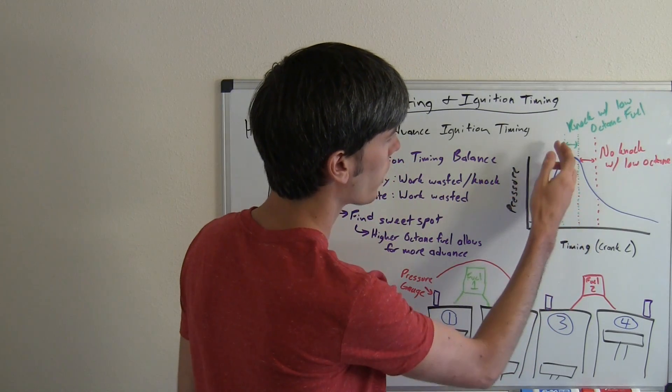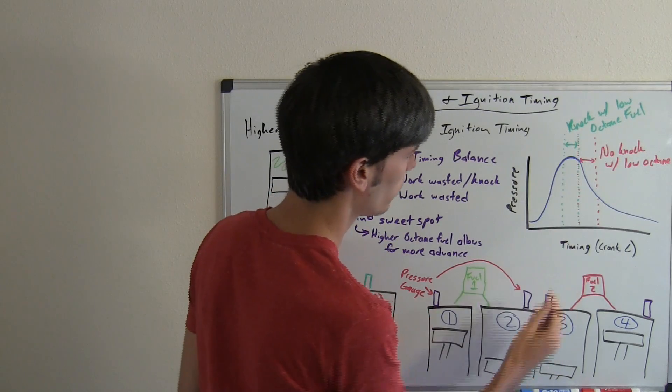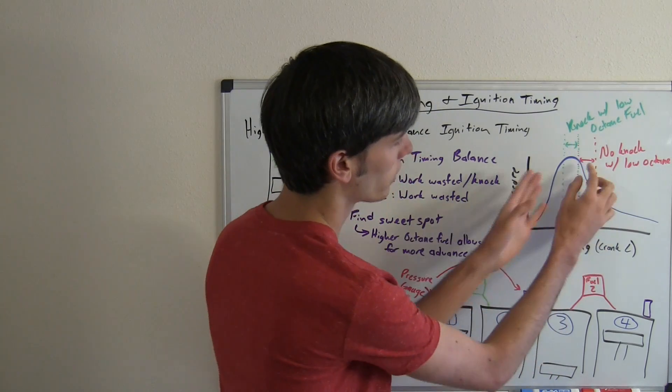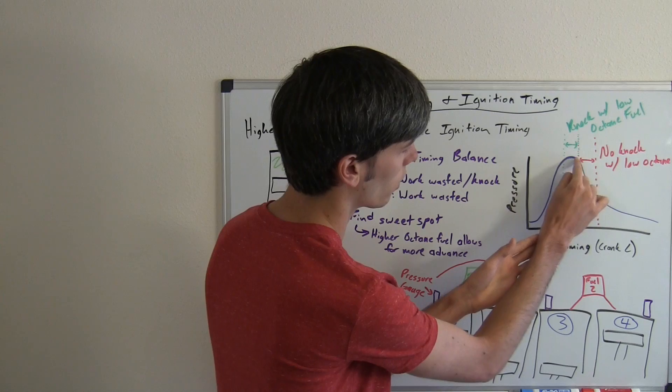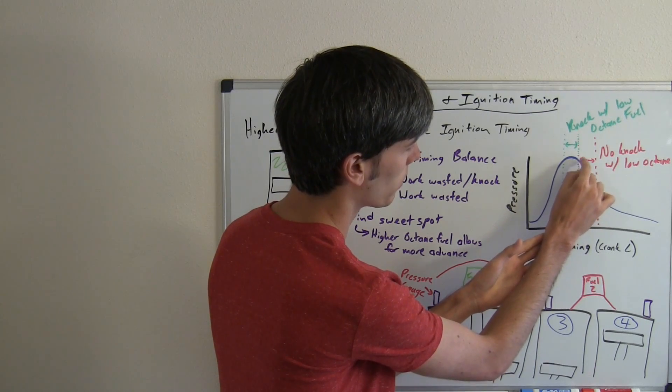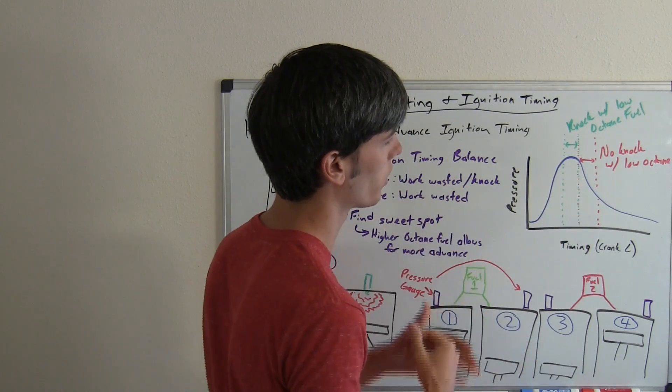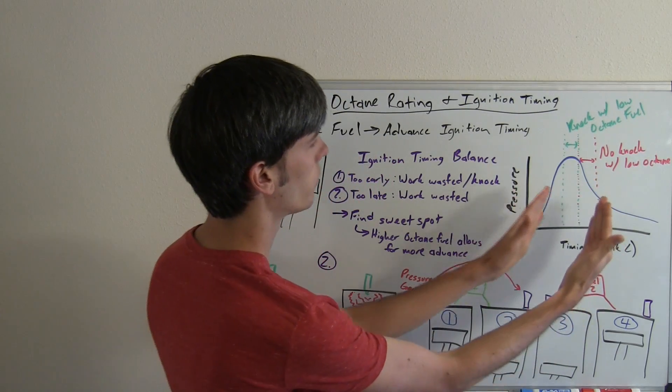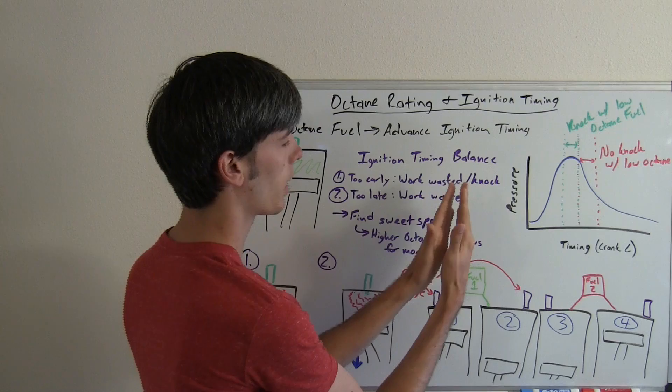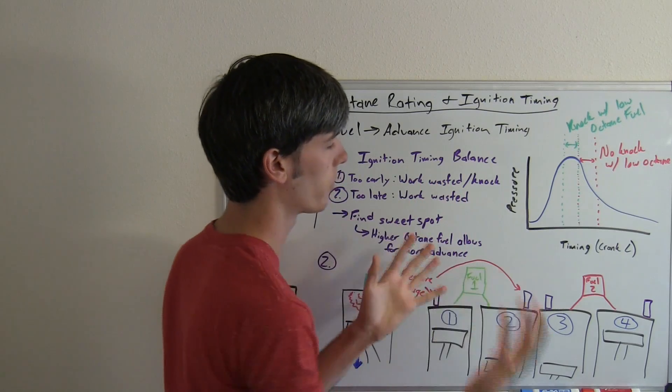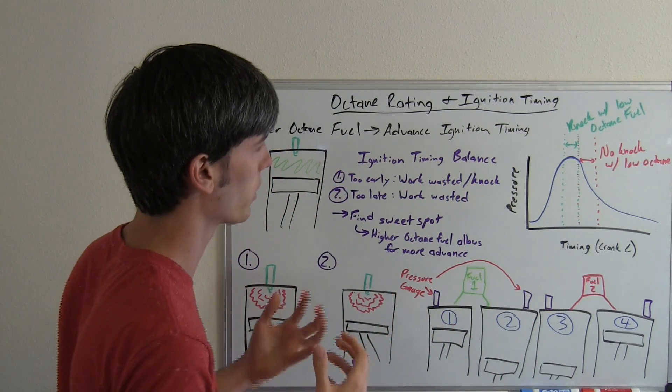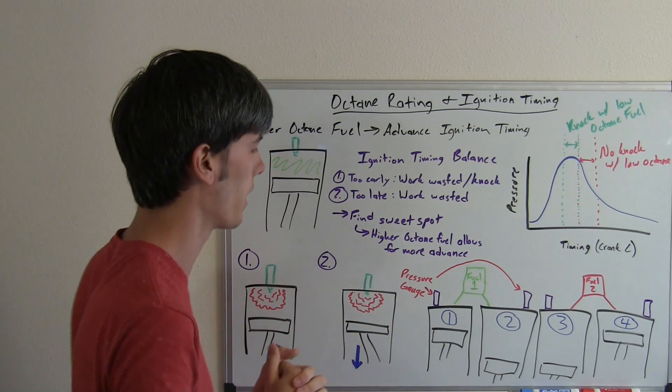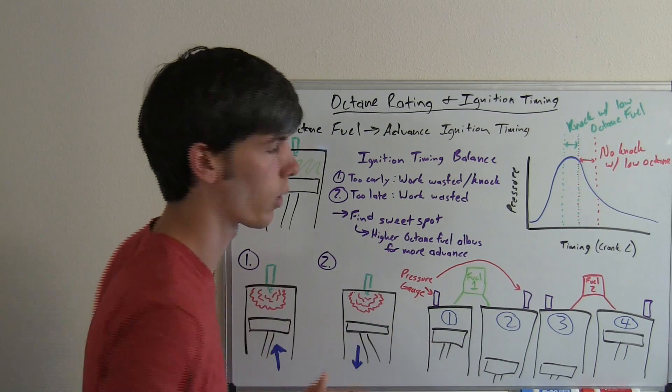But in order to have the timing to do that, you can't use a low octane fuel because in this example we're going to say that knock is going to occur some point around if you have your peak pressure occurring here based on your ignition timing. So what a higher octane fuel does is allows you to advance the timing a little bit earlier, preventing knock and allowing you to have that peak pressure a bit higher and create more power ultimately.